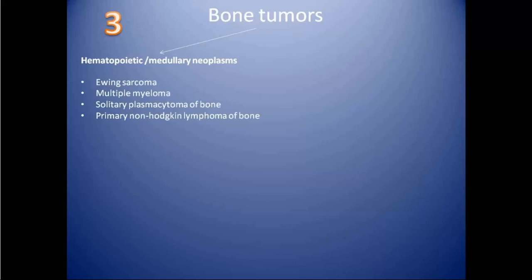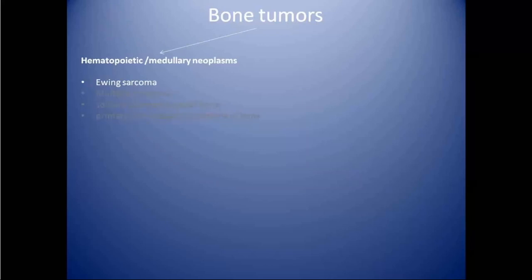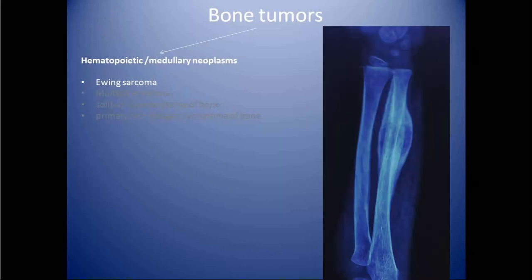The third category of tumors includes hematopoietic and myeloid neoplasms, which includes Ewing sarcoma, multiple myeloma, solitary plasmacytoma of bone, and primary non-Hodgkin lymphoma of bone. Ewing sarcoma is seen as an ill-defined osteolytic lesion with multi-layered periosteal reaction. These lesions are generally seen in patients less than 20 years of age, predominantly in the diaphysis of long bones, but can also be seen in flat bones like the iliac plate and ribs.